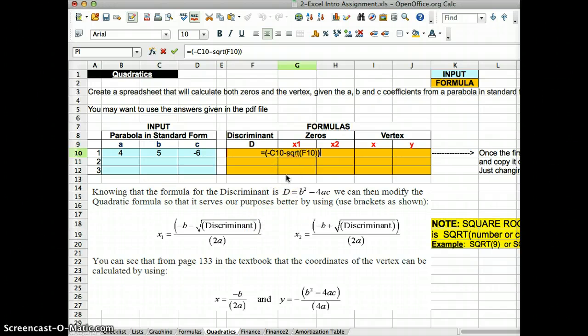Close bracket again, divided by, open bracket, two times a. Now a is over here. Close bracket, and there's my zeros, minus two.